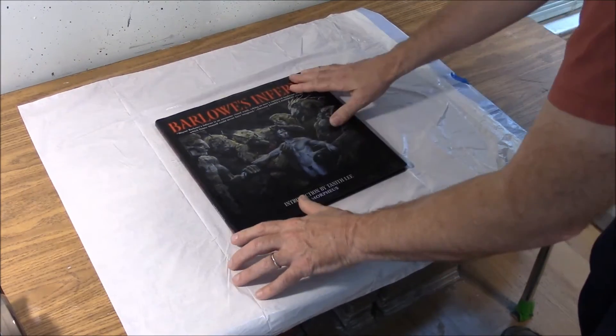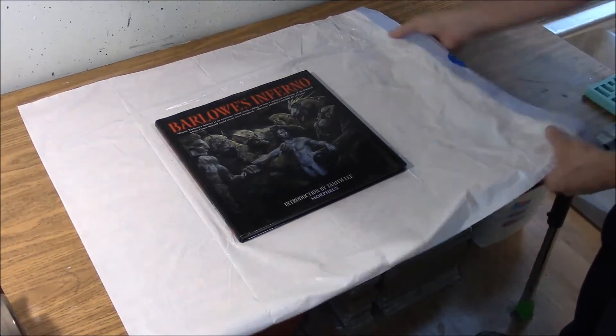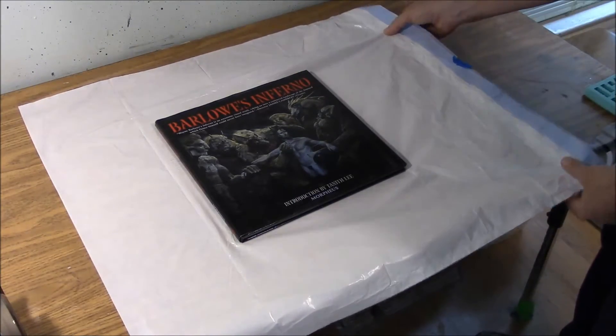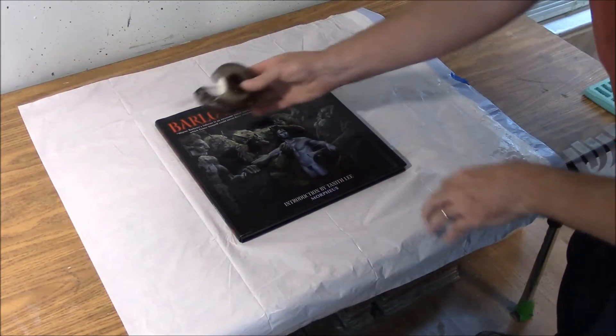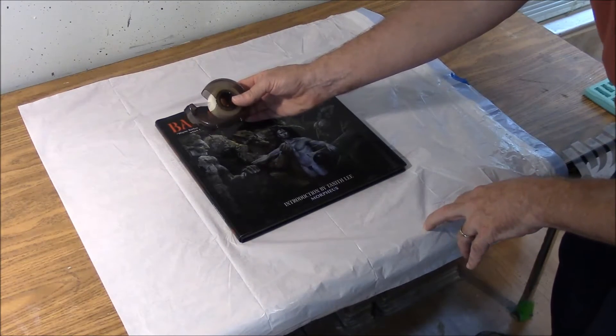Set it down on top of a kitchen trash bag. This is a tall kitchen trash bag, and what you want to do is use some clear tape to tape it over and protect the book.